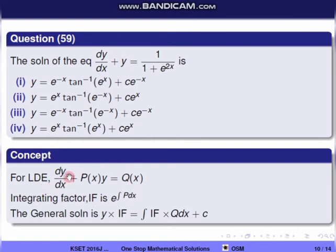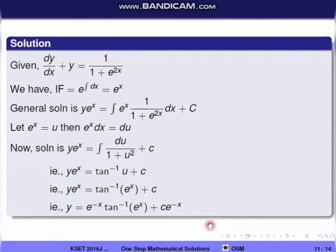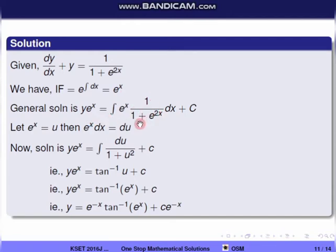Next, we solve the linear ODE dy/dx + y = 1 + e^(2x) type. The integrating factor is e^(∫p dx). Here p = 1 (coefficient of y), so IF = e^(∫dx) = e^x. The general solution is y·e^x = ∫e^x · (1/(1 + e^(2x))) dx + c.